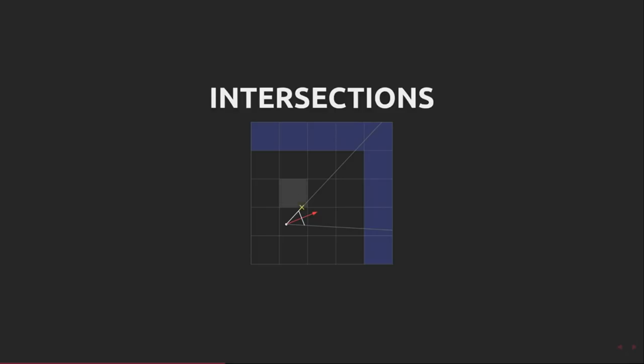Our first point of intersection is with the horizontal grid line north of the player. I've marked the intersection point in yellow. We check the map data of the cell and discover it's empty, so no intersection with a wall here.